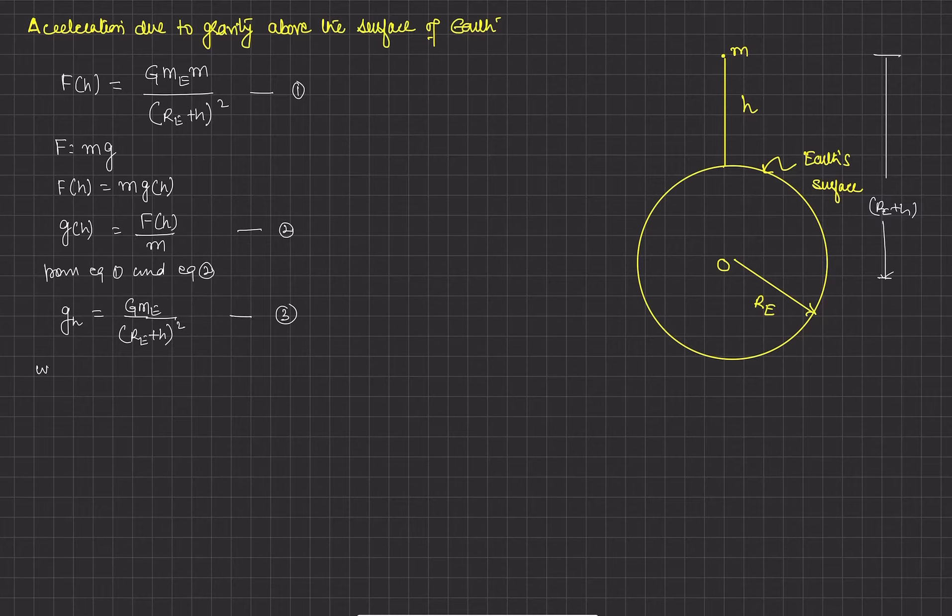We know that gravity on the surface of earth is equal to G times M_e mass of the earth upon radius of earth squared. This is equation number four.